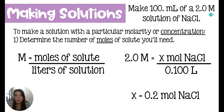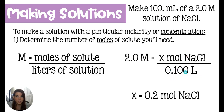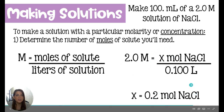We know we want a 2 molar solution and only 100 milliliters of it — no excess. So I take that 100 milliliters, move the decimal three times, and get 0.100 liters. We have x number of moles of NaCl. You put 2 molar over 1, cross multiply, solve for x, and you get 0.2 moles of NaCl.